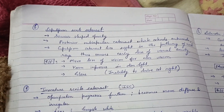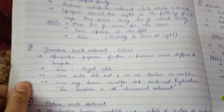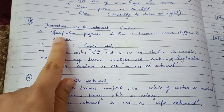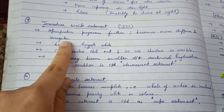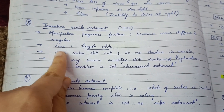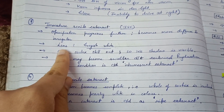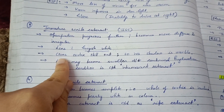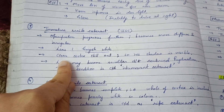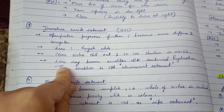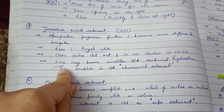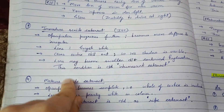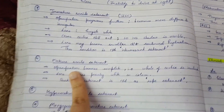The third stage is immature senile cataract. In immature senile cataract, opacification progresses further and becomes more diffuse and irregular. The color of the lens is grayish-white. Clear cortex is still present, thus iris shadow is visible. The lens may become swollen due to continued hydration, and this condition is known as intumescent cataract.